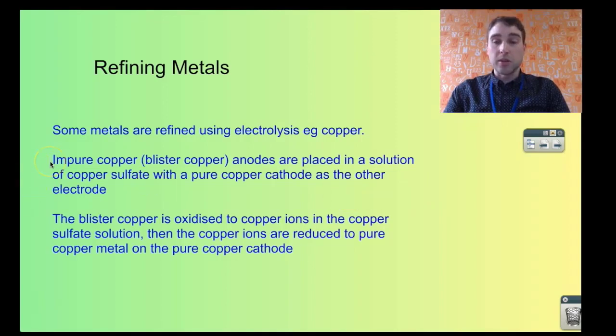They make some impure copper first from the copper ore. That's impure copper, normally about 95% pure. There's other impurities, there's slag, there might be gold and there might be silver in there too.